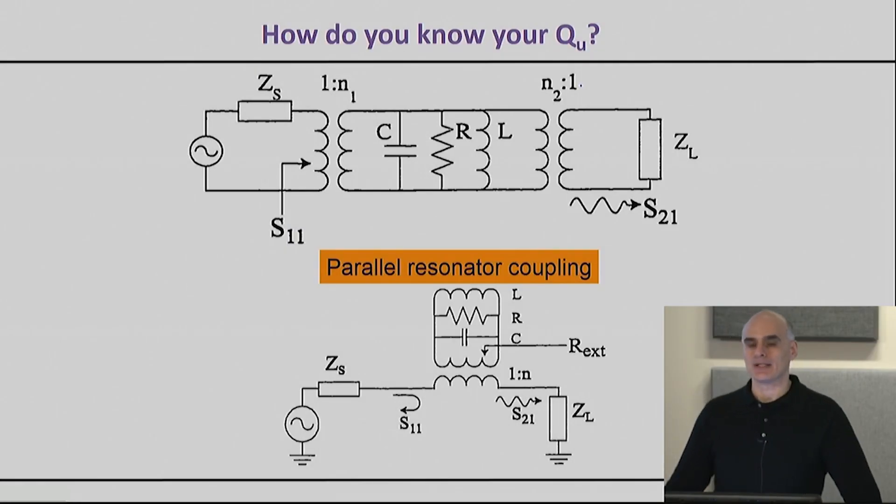Alright, so that has given you a pretty good idea of what technology choices you can make when you're designing your resonator. Let's say you have decided to design and build a resonator—the next natural question is, how on earth do I know my unloaded Q? Somehow I have to be able to load this with signal, with an excitation, and get the information that I want.